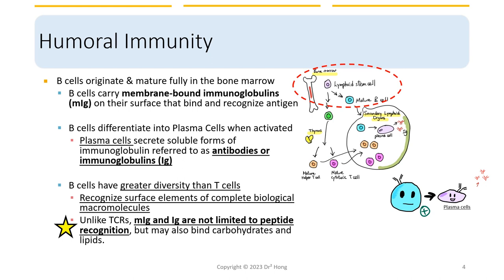B cells carry membrane-bound immunoglobulins, abbreviated as MIG, on their surface that bind and recognize antigens. When B cells are activated, they will differentiate into plasma cells. The main thing about plasma cells is that they can secrete soluble forms of immunoglobulin, referred to as antibodies or IGs. B cells have greater diversity than T cells, meaning that they can recognize surface elements of complete biological macromolecules.